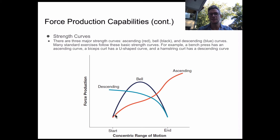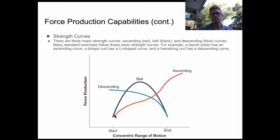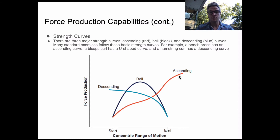Last but not least would be ascending — like a squat or a bench press. At the bottom of the lift, we have less force produced, but the more and more we push through, the more force we get, until all the way at the end of the exercise — at the end of the range of motion — we still have the most force being produced at that point in time.